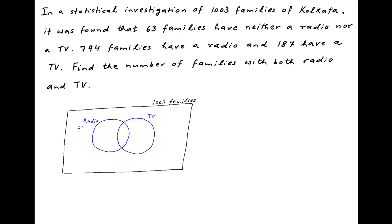Number of families with a radio is equal to 794, and number of families with a TV is equal to 187. Now we are also given that 63 families own neither a radio nor a TV.